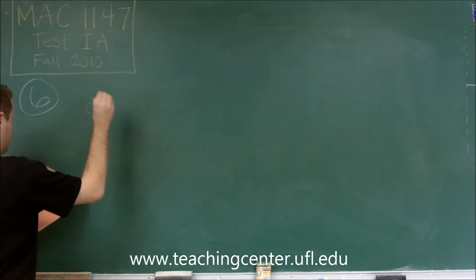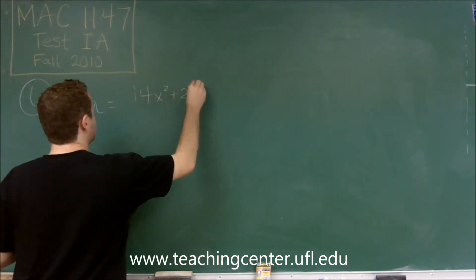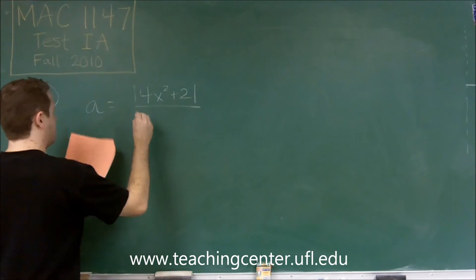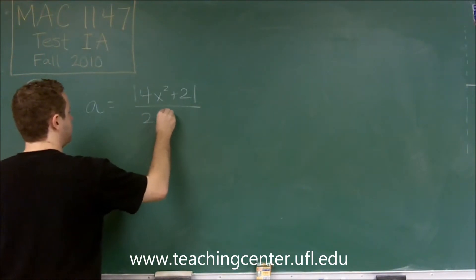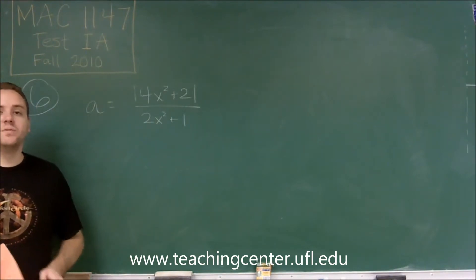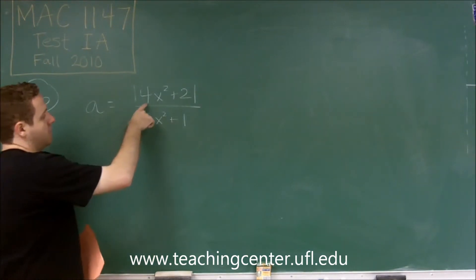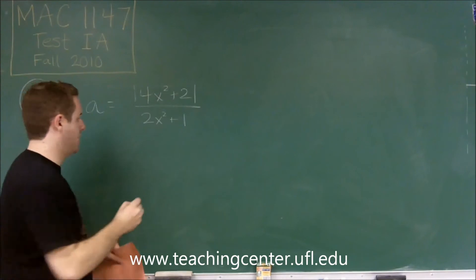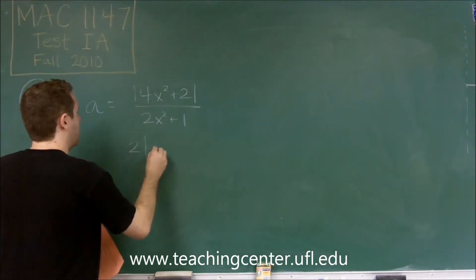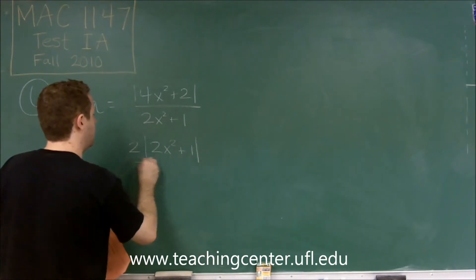So A is absolute value 4x squared plus 2 over 2x squared plus 1. So we need to try to simplify this as much as possible. Now if you have constants inside your absolute value that are positive, you can factor them out. So here we have 4x squared plus 2, we can factor a 2 out of that. And we get 2 absolute value 2x squared plus 1 over 2x squared plus 1.